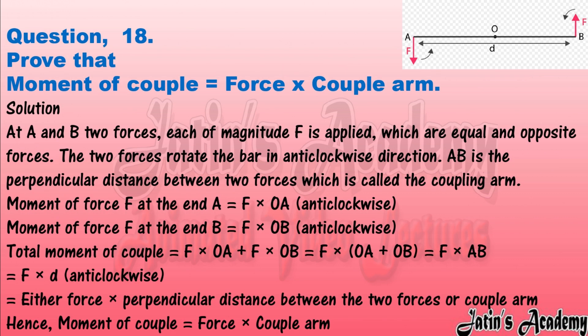Question eighteen: prove that moment of couple is equal to force times couple arm. Solution: at points A and B, two forces each of magnitude F are applied, which are equal and opposite. Moment of force F at end A = F × OA (anticlockwise). Moment of force F at end B = F × OB (anticlockwise). Total moment of couple = F×OA + F×OB = F×(OA + OB) = F×AB = F×d (anticlockwise), which equals force times perpendicular distance between the two forces, i.e., the couple arm. Hence, moment of couple equals force times couple arm.